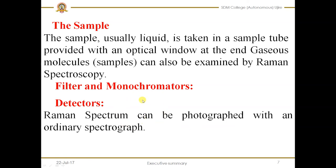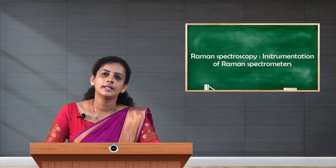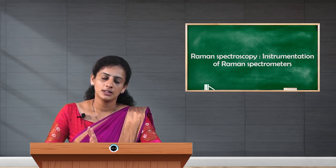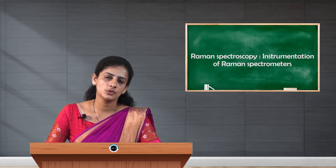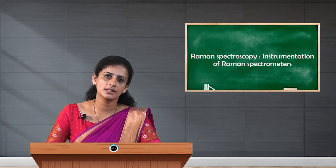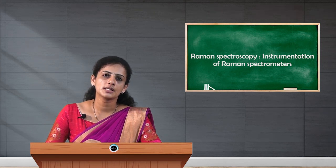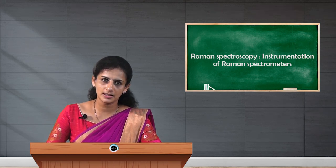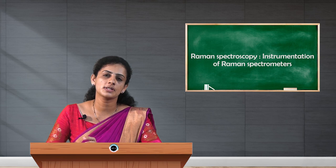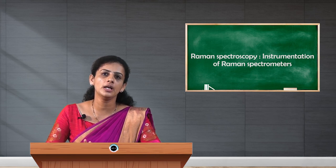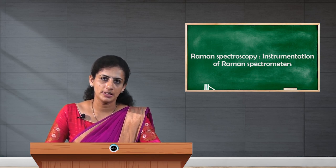This is about the instrumentation of the Raman spectrometer, and here I have explained when the mercury arc lamp is used as a source. If lasers are used as a source, then filtration or a monochromator is not used, and the lasers concentrate only on the capillary which contains the sample. Thank you.